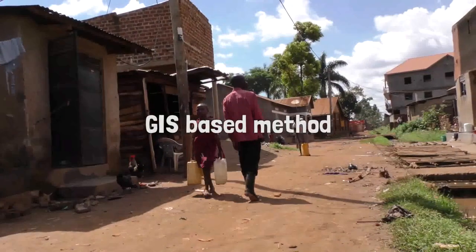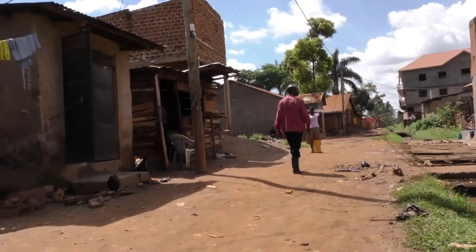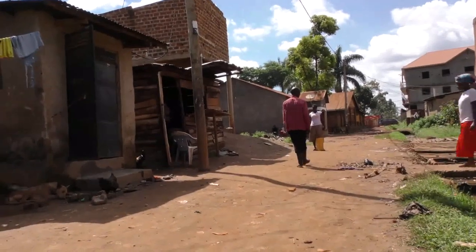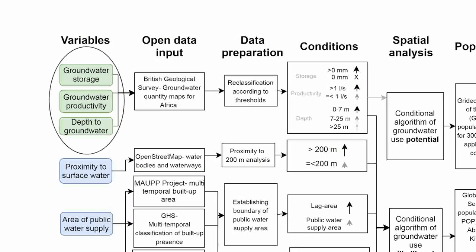This GIS-based method estimates both the maximum and likely urban population using self-supply groundwater. The maximum urban population was estimated by considering physical characteristics of the groundwater system — in other words, the presence of an aquifer, aquifer potential and depth to groundwater.